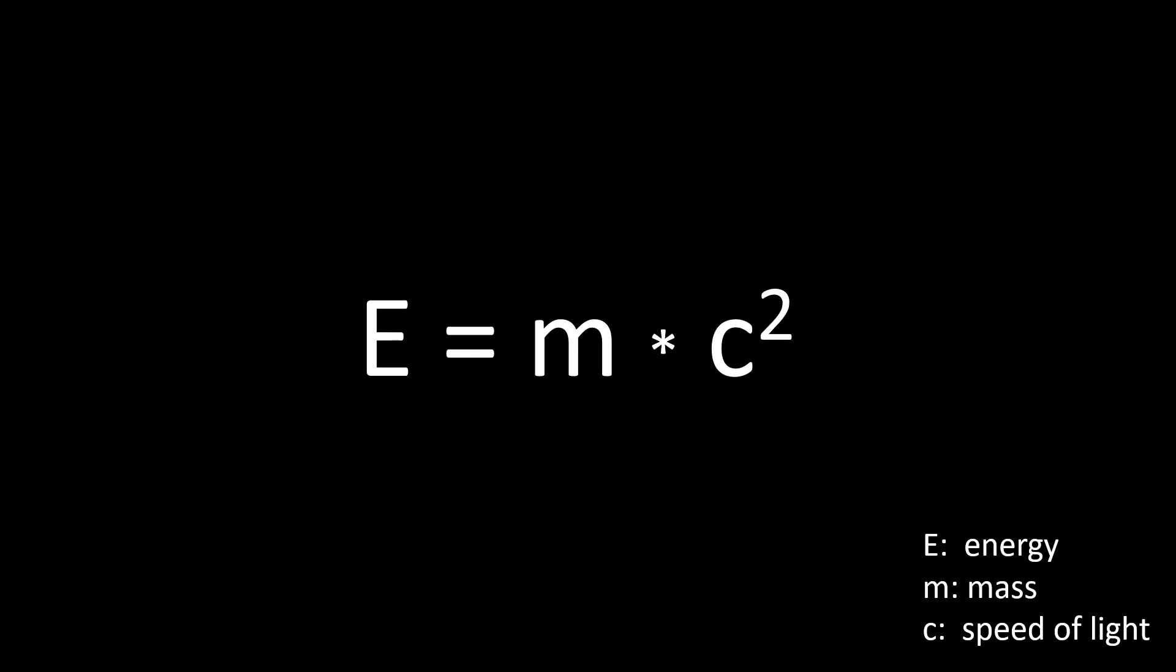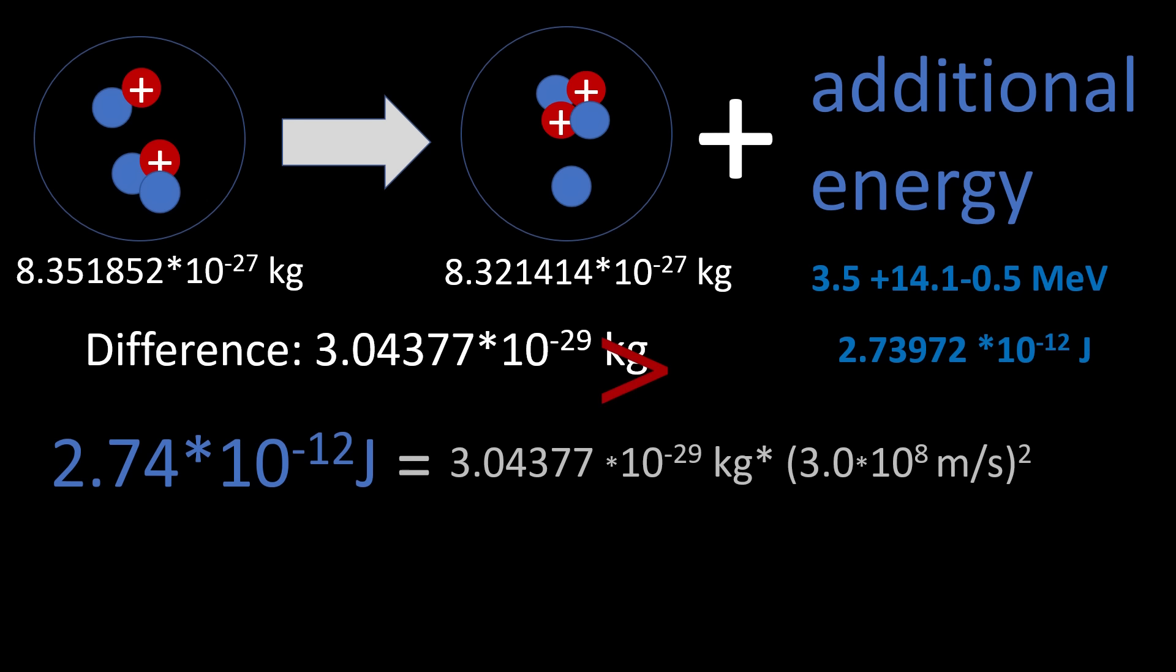So, this is what Einstein's famous relationship refers to, mass being equivalent to energy. If we apply this formula to the mass gone missing, we arrive at an energy equivalent of 2.74 times 10 to the minus 12 joules, which is in fact exactly the net energy we got out of the reaction.